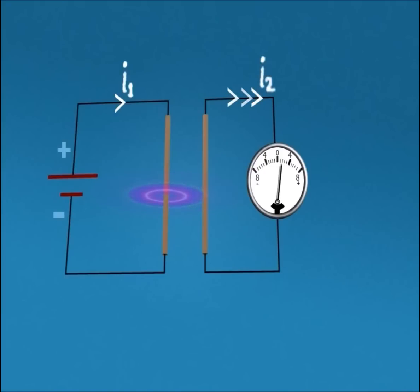We can see this from deflection in the needle of a galvanometer. But after some time deflection becomes zero because both conductors are stationary, meaning there is no relative movement between them. This is known as dynamically induced EMF.